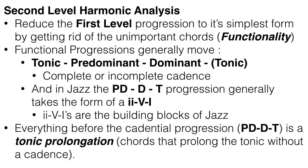On the second level, we're looking to reduce the first level progression to its simplest form by getting rid of all the unimportant chords and keeping only the structurally important ones. In this way we analyze the progression in terms of the function of each chord. Essentially we want to reduce each chord into one of three categories: predominant, dominant, or tonic. The predominant pulls to resolve to the dominant, and the dominant pulls to resolve to the tonic.